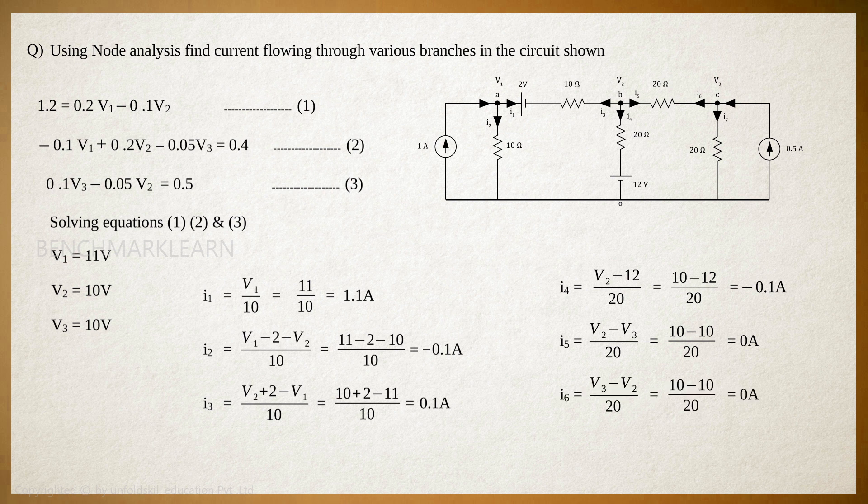I6 is equal to (V3 − V2)/20, which is equal to (10 − 10)/20, which is equal to 0 amperes. And I7 is equal to V3/20, which is equal to 10/20, which is equal to 0.5 amperes. Here, we can see that I2 and I3 are the same. Similarly, I5 and I6 are the same.